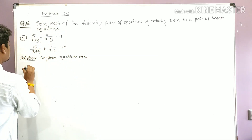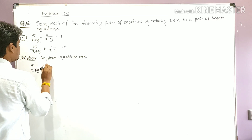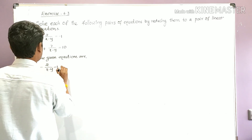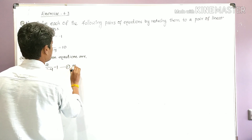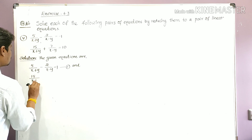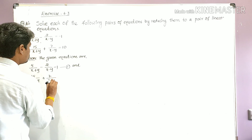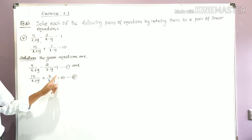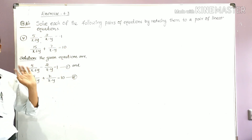The given equations are: Equation 1: 5/(x+y) minus 2/(x−y) equals −1, and Equation 2: 15/(x+y) minus 7/(x−y) equals 10. These are the two given equations, where the first is Equation 1 and the second is Equation 2.